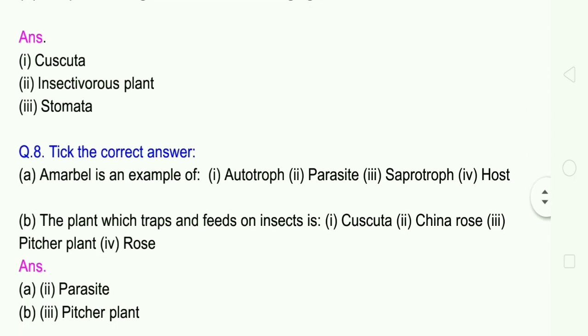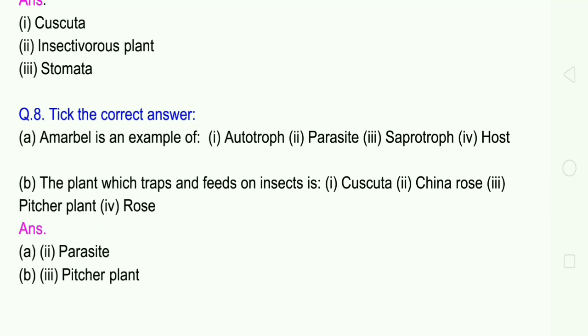Question 8: Tick the correct answer. Amabel is an example of: 1 autotroph, 2 parasite, 3 saprotroph, 4 host. Answer is parasite. Amabel is like Cuscuta plant. So the answer is parasite.